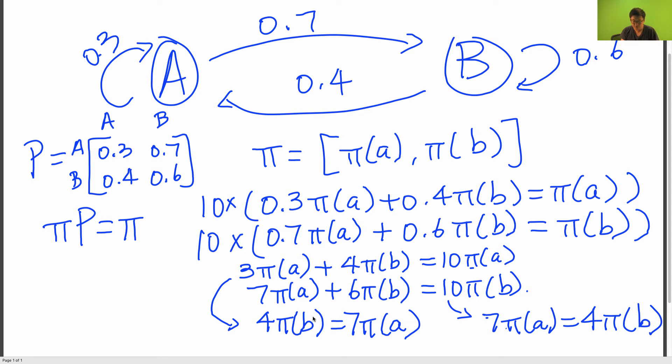So now if you notice, these two equations are exactly the same equation. They're redundant equations. So as of right now, we can't actually solve this system of linear equations because we have two unknowns, pi A and pi B, but we only have one useful equation.